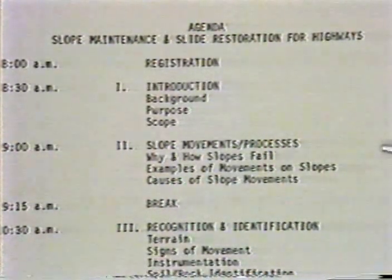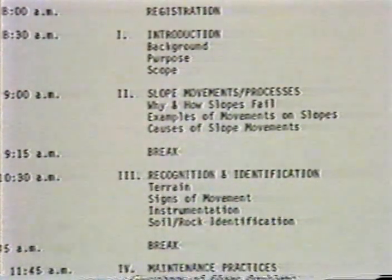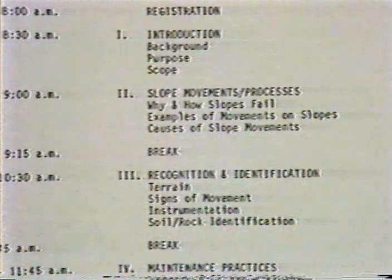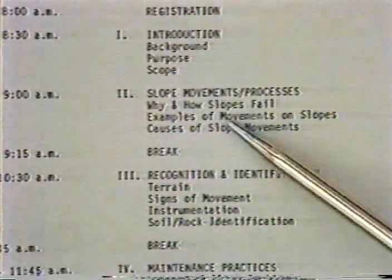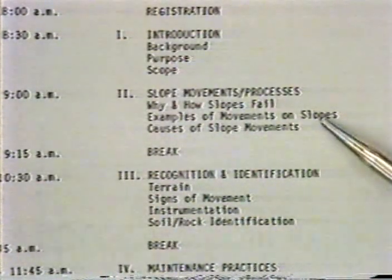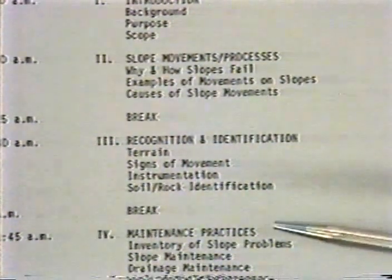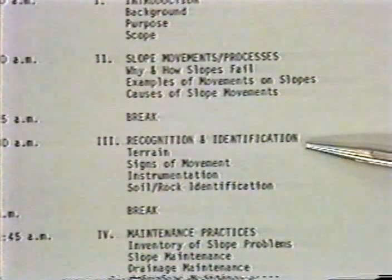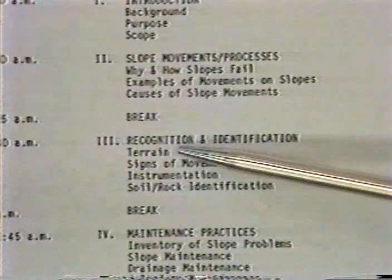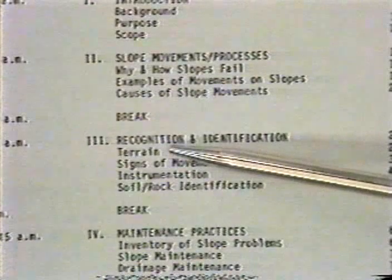The next section will be slope movements and processes, presented by Tom Hopkins, a research engineer with the Kentucky Transportation Research Program whose major interest is in geotechnical work and who has worked in landslide areas. He will cover why and how slopes fail, examples of movements on slopes, and the causes of slope movements. Then we'll have a break, after which we'll go into the third part — recognition and identification — which you can follow along in your manual.